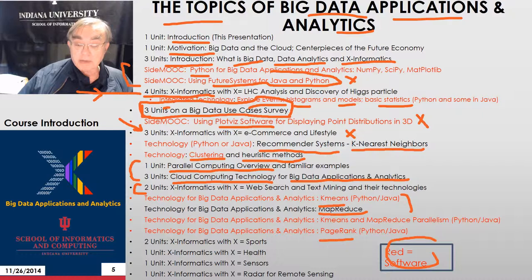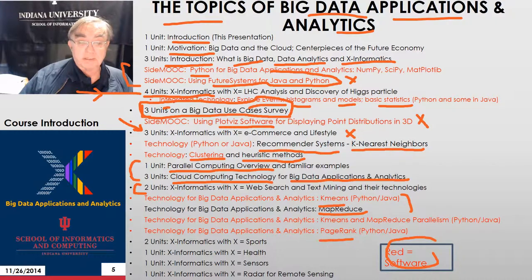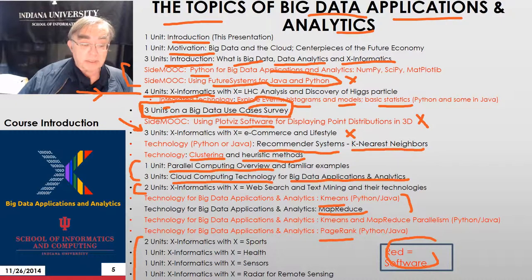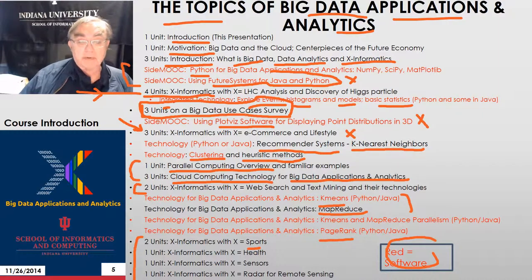Then we do another application: PageRank, which is famous as the critical innovation that made Google a dominant company. The course ends with four different values of X: sports — which is in some of my classes the most popular, which is why I offer it situated here, though I actually offer it earlier in the class — health, sensors and remote sensing, and radar analysis.